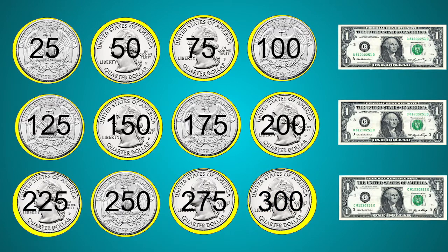Did you notice that a dollar bill appeared on the screen after every four quarters? That's because four quarters equals one dollar, or 100 cents equals one dollar. Four quarters equal a dollar, and our last four quarters also equal a dollar. 12 quarters, or 300 cents, equals three dollars.